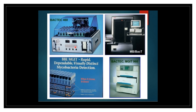Various rapid automated methods are available for growing and identifying mycobacteria, including the Mycobacteria Growth Indicator Tube (MGIT) and BACTEC 460. BACTEC methods can be calorimetric, radiometric, or fluorometric; various sensors detect the presence of mycobacteria when they grow in culture media.